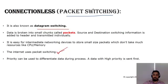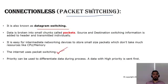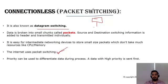Another feature of connectionless switching is that the data transferred can be prioritized. For example, if we have 10 different packets to transfer, we can prioritize certain packets so they take preference when the switch processes the data, meaning prioritized packets are sent first before all others.